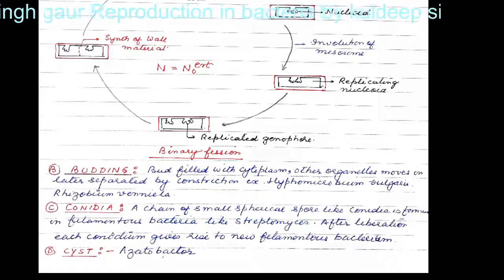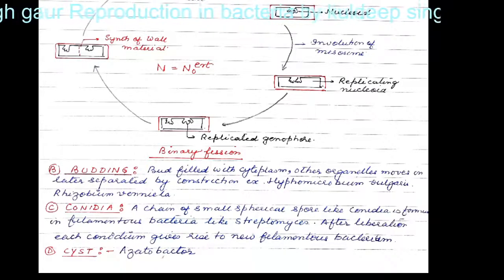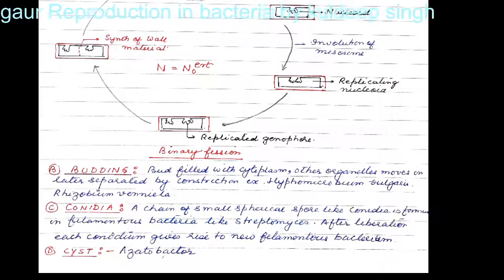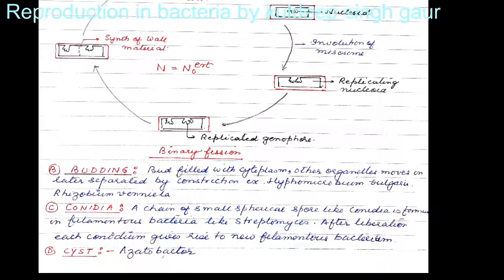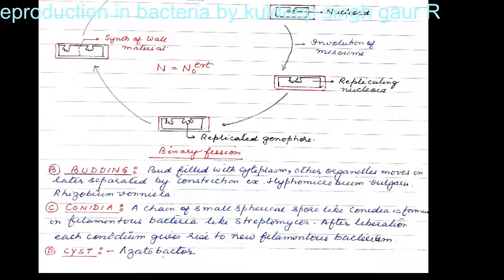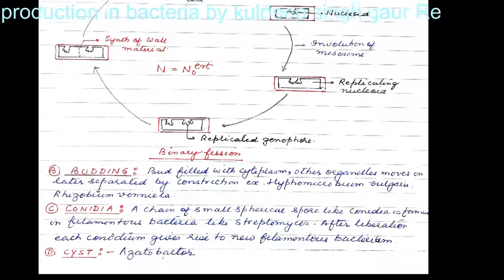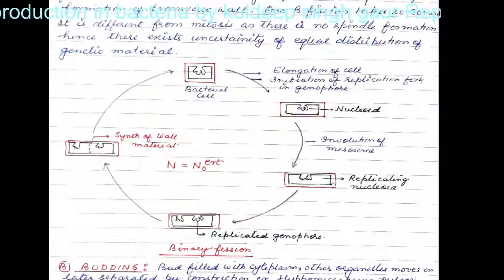Then there is cyst formation. Bacteria also reproduce asexually by formation of cysts, and the example is Azotobacter.